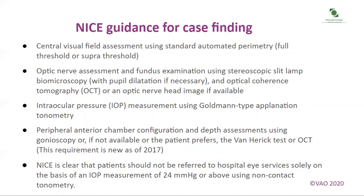Intraocular pressure measurement using Goldmann-type applanation tonometry. Peripheral anterior chamber configuration and depth assessments using gonioscopy, or if not available or the patient prefers, the Van Herrick test or OCT. This requirement is new as of 2017. NICE is clear that patients should not be referred to hospital eye services solely on the basis of an IOP measurement of 24 mmHg or above using non-contact tonometry.